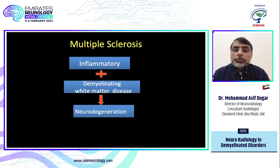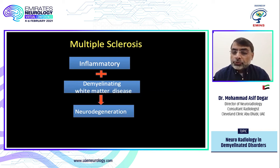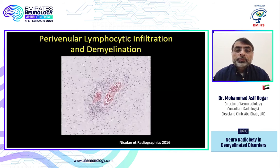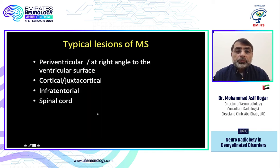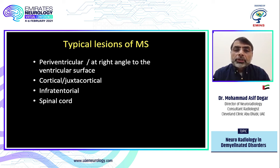Multiple sclerosis is an inflammatory demyelinating disorder of the white matter which leads to neurodegeneration. It is basically a perivenular lymphocytic infiltration and demyelination — you can see the lumen of the vessel and the surrounding cells. Before going into the detail of the McDonald criteria, let's look at the typical lesions of MS on MRI.